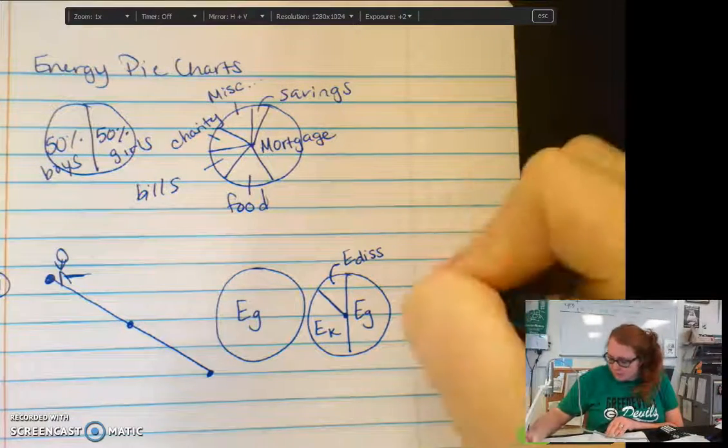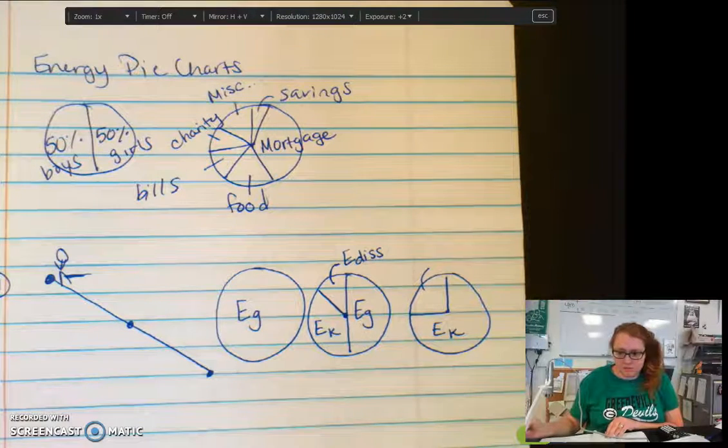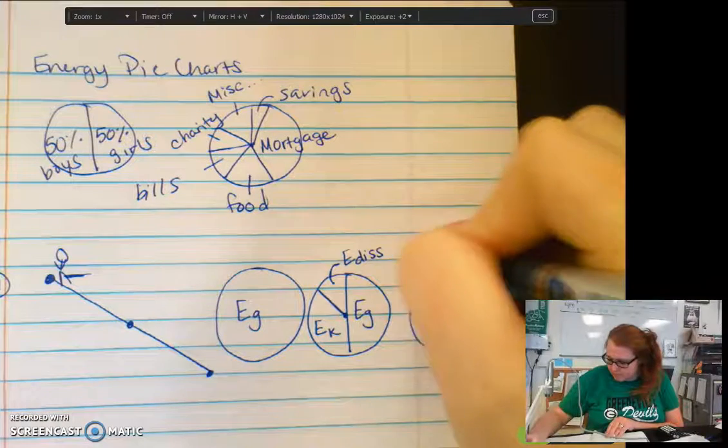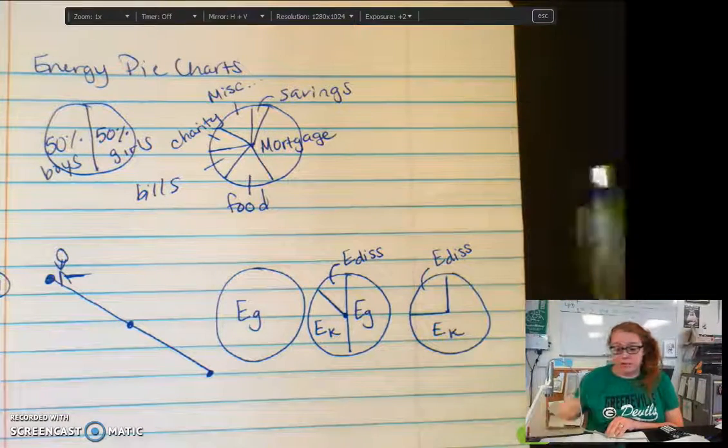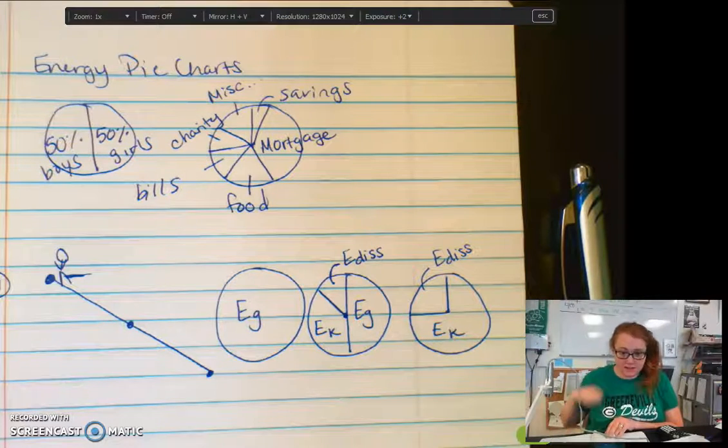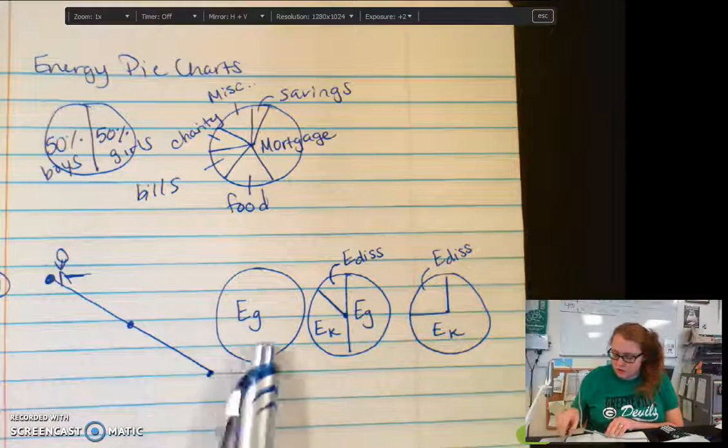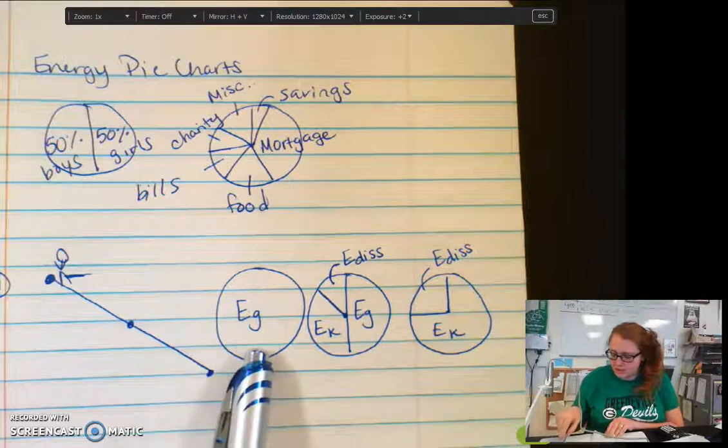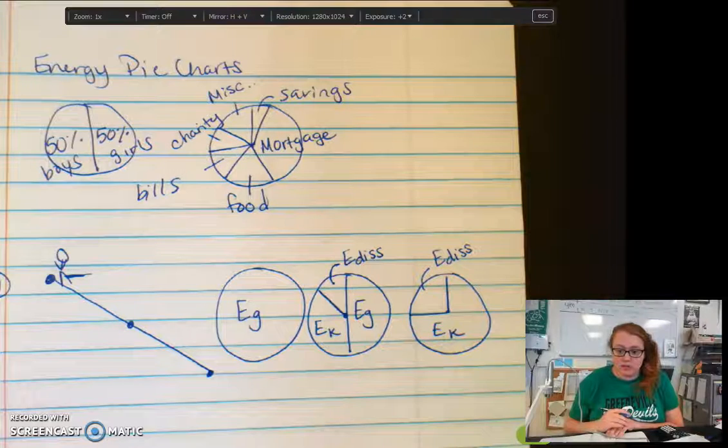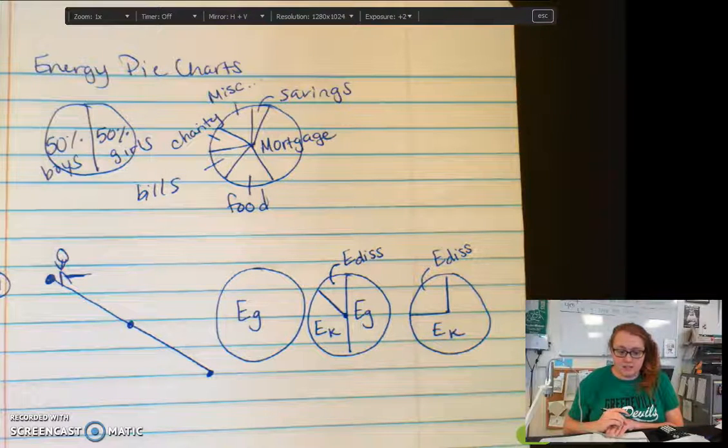And because there's friction, because you're heating up a little bit, even more energy was transferred out of our system. So that became dissipated energy. So I started with 100 percent gravitational potential energy and I ended with mostly kinetic energy and some energy lost.